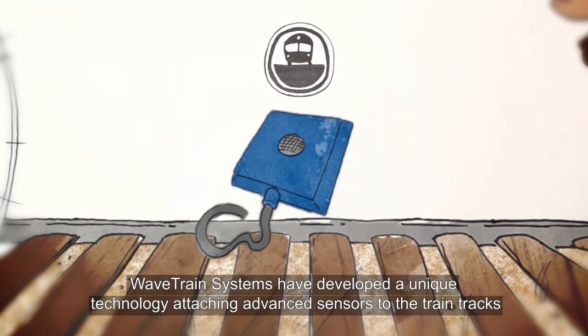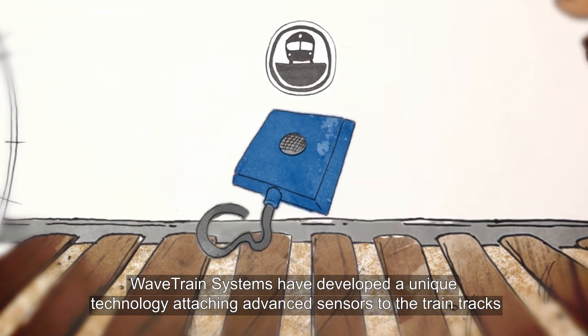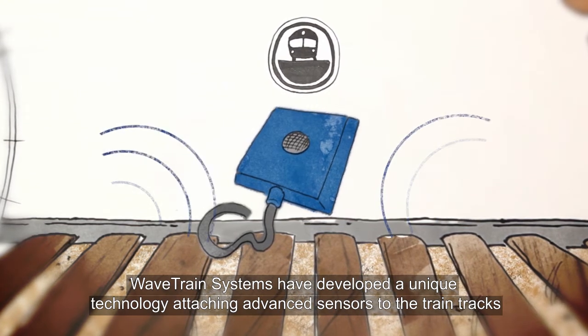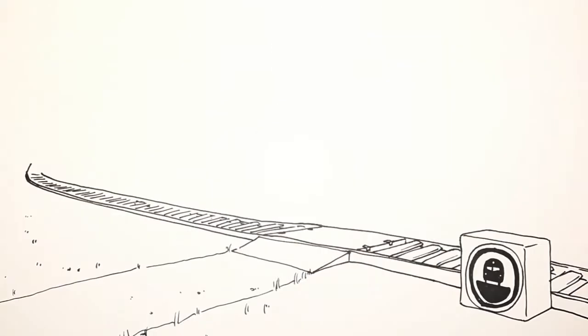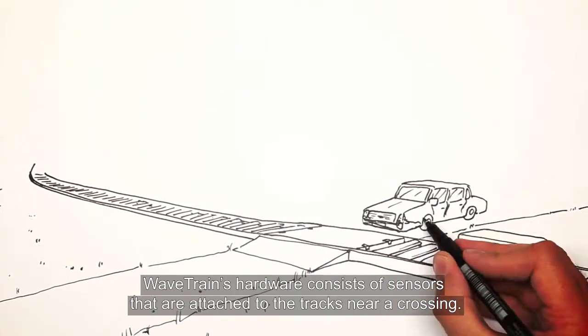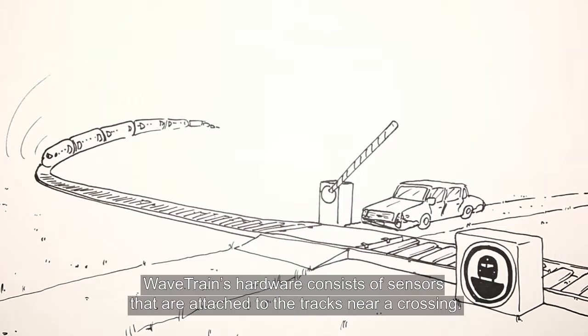Wavetrain's systems have developed a unique technology attaching advanced sensors to the train tracks to hear the sound waves produced by the trains. Wavetrain's hardware consists of sensors that are attached to the tracks near a crossing.